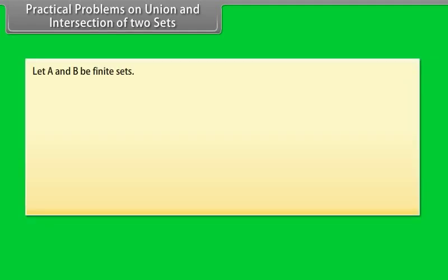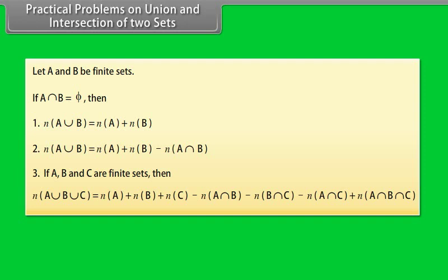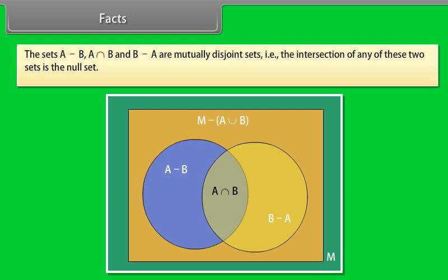Practical problems on union and intersection of two sets. Let A and B be finite sets. If A intersection B equals phi, then N(A union B) = N(A) + N(B). If A, B and C are finite sets, then the formula extends accordingly. The sets A minus B, A intersection B, and B minus A are mutually disjoint sets. That is, the intersection of any two of these sets is the null set.